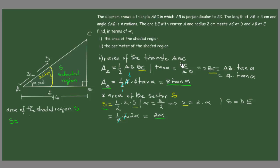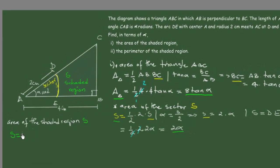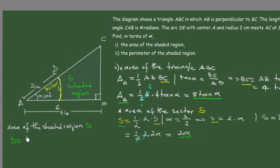Now that we have the area of triangle ABC and the area of the sector, we subtract the sector area from the triangle area to get the shaded region. The area of the shaded region equals the area of the triangle minus the area of the sector, which gives us 8tan(α) minus 2α.